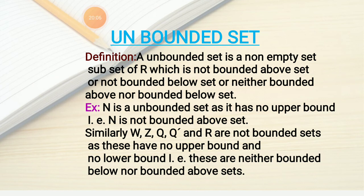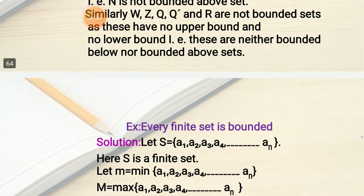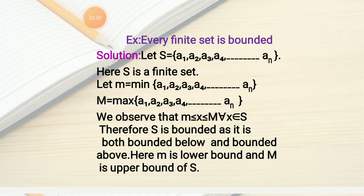An unbounded set is a non-empty subset of R which is not bounded above, not bounded below, or neither. N is an unbounded set because it has no upper bound. Similarly, W, Z, Q, Q', and R are not bounded sets — W is bounded below but not above, while Z, Q, Q', and R have no upper bound and no lower bound, so they are not bounded sets.